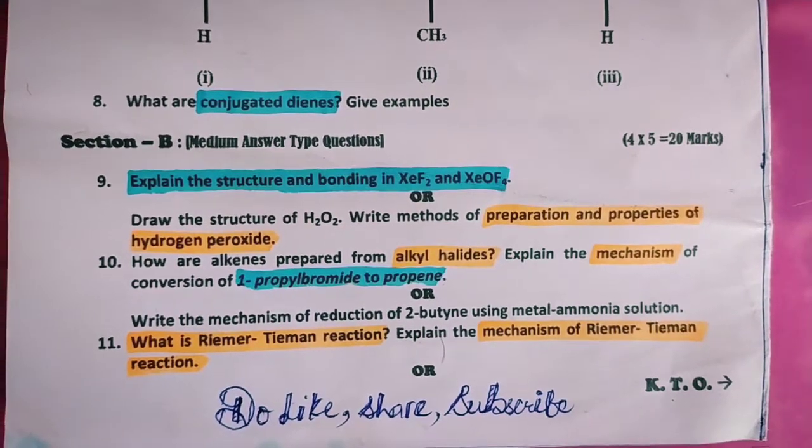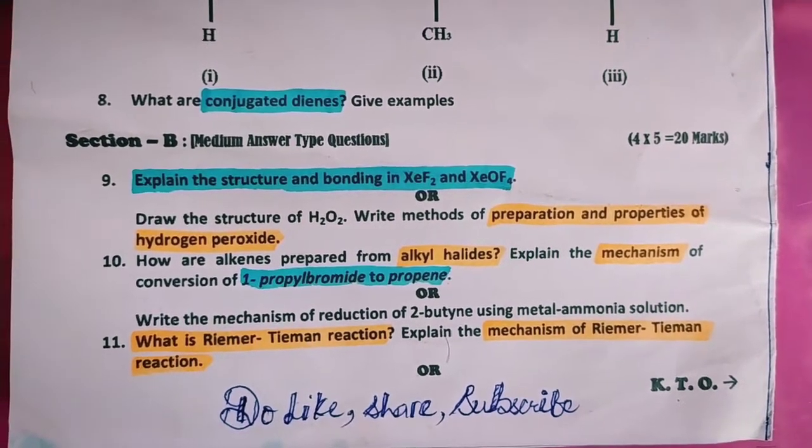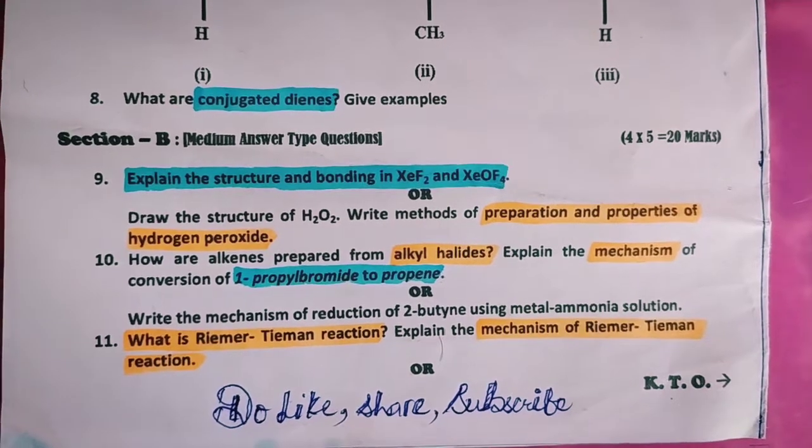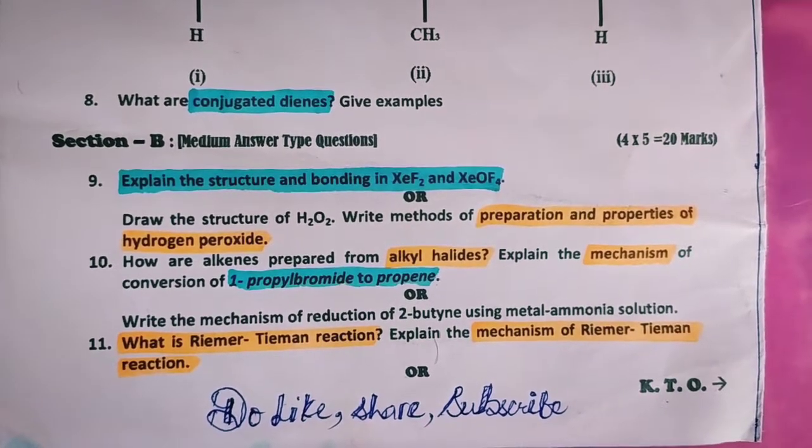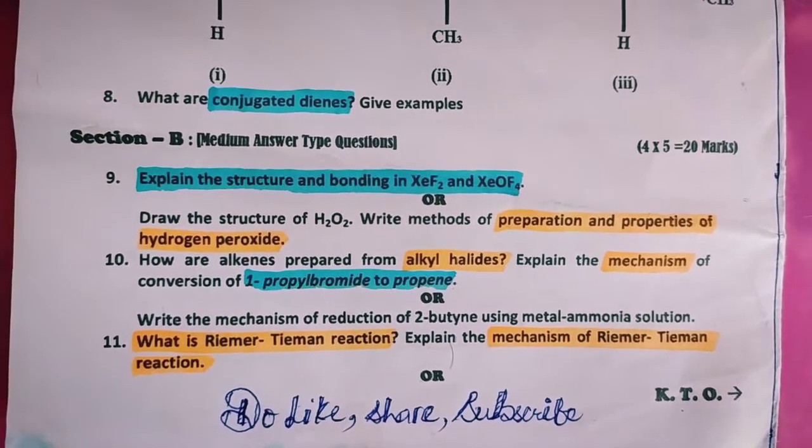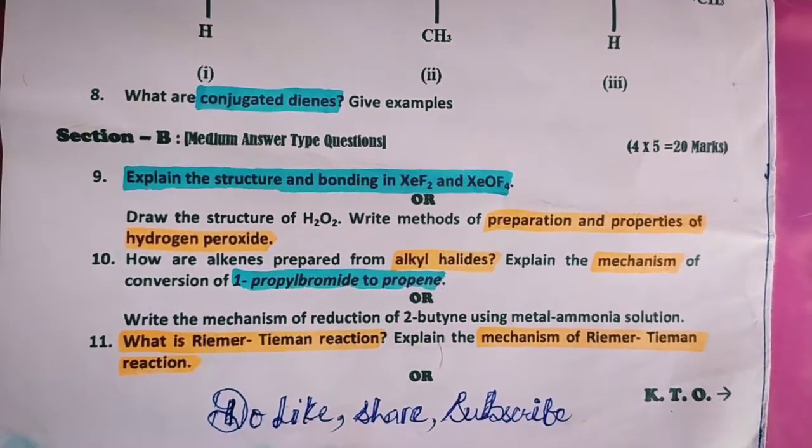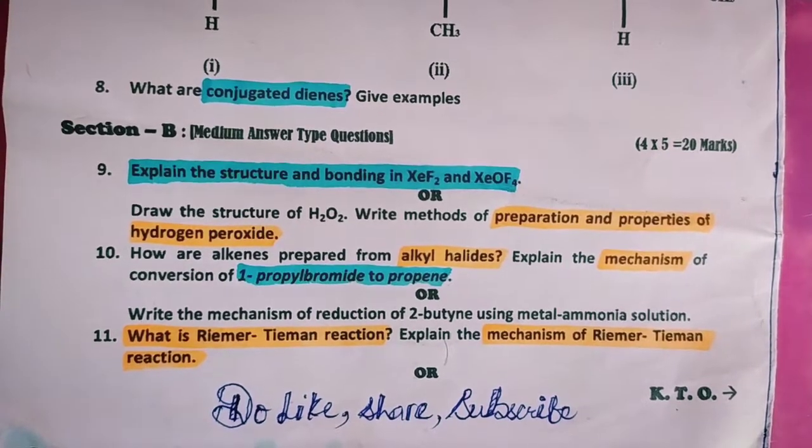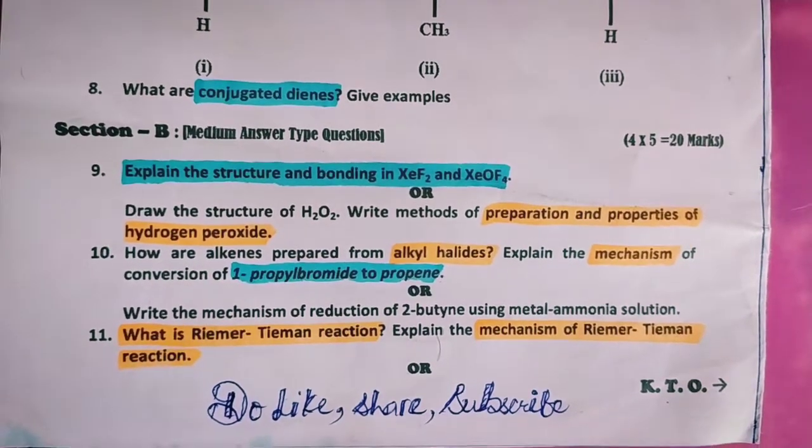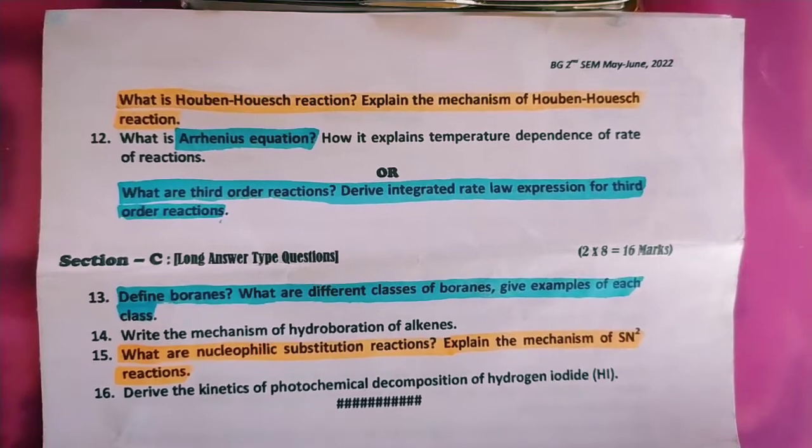Write the mechanism of reduction of 2-butyne using metal ammonia solution. What is Riemer-Tiemann reaction? Explain the mechanism of Riemer-Tiemann reaction. It's the most important question, so take it seriously.